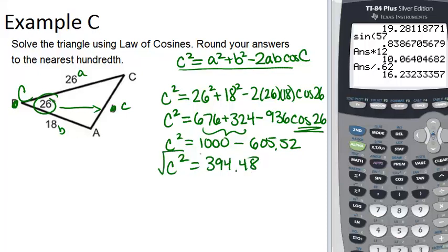To finish off, we square root both sides to find C, and we get that C is approximately 19.86, rounded to the nearest hundredth. I'll see you next time.